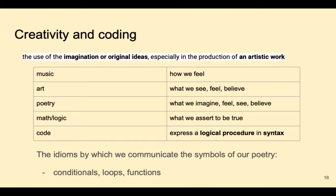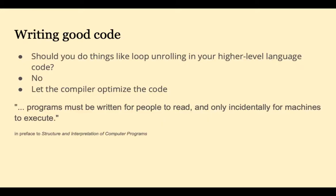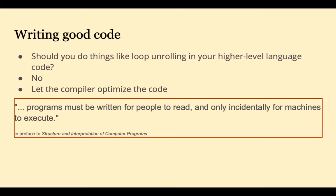Programming is a creative expression. We can express ourselves creatively through music, art, poetry, math and logic, or code. The idioms by which we communicate in code are things like conditionals, loops, and functions. Sometimes after I explain compiler optimizations like loop unrolling, someone will ask should I do things like loop unrolling in a higher-level language in my code? The answer is no. You should let the compiler optimize the code — if you do something unusual, the compiler may not recognize what you were trying to do. The most important reason is this quote from Structure and Interpretation of Computer Programs: 'Programs must be written for people to read, and only incidentally for machines to execute.'